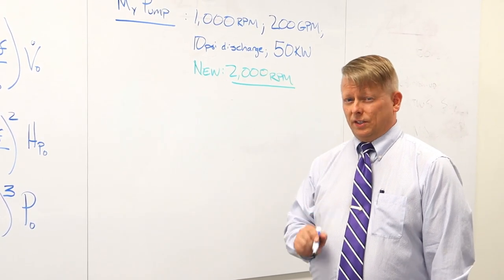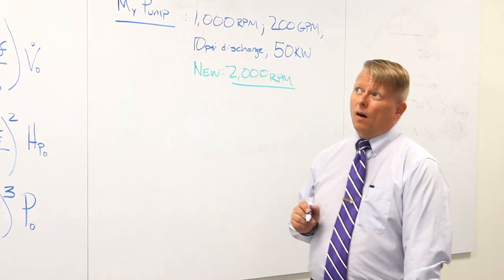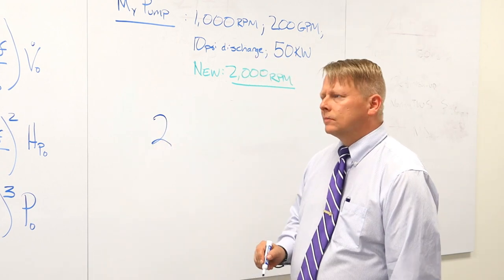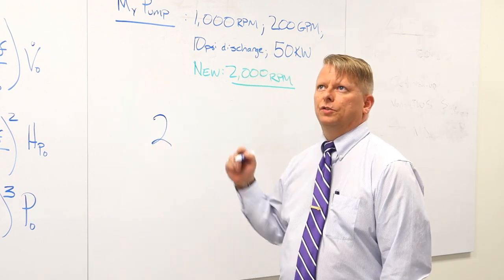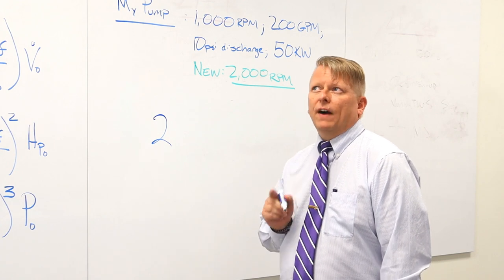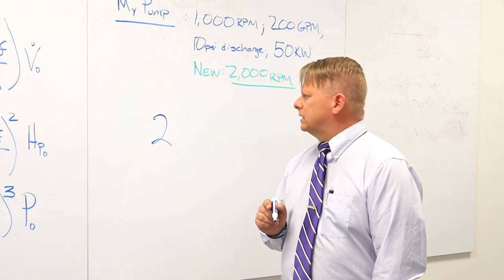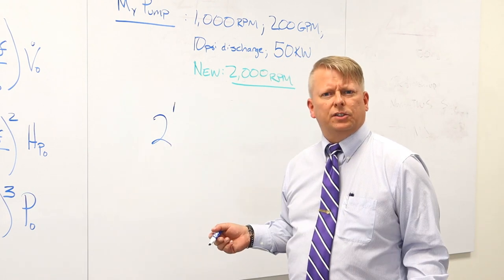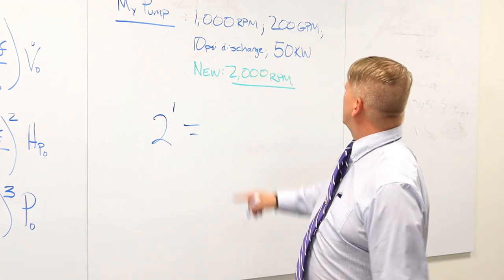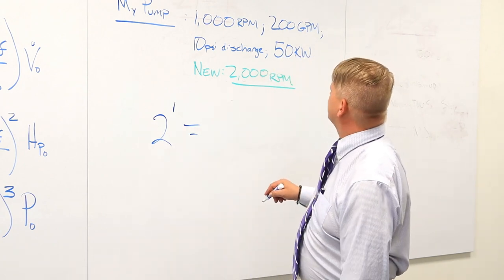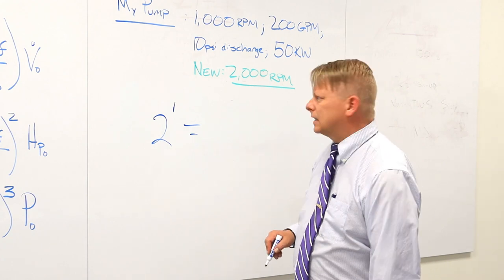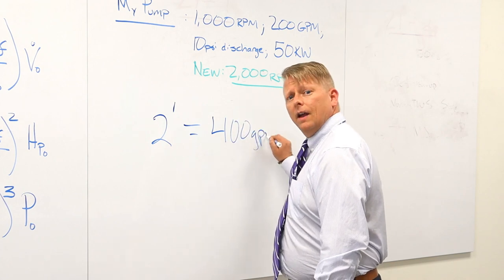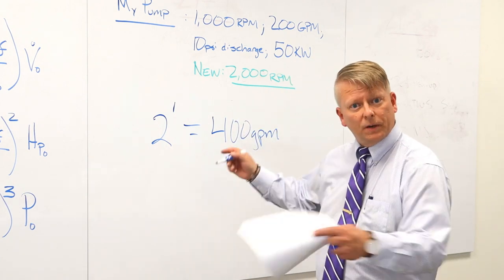So you could have done this the really quick way and said, well, speed changed by a factor of 2. Very hard problems are as easy as 1, 2, 3. So I'll bet you my final volumetric flow rate would just be 2 to the first power times whatever the initial value was. Let me see if that works. 2 times the initial value of 200 GPM, that would give me 400 GPM. And sure enough, that's what we came up with when we worked out the full equation.